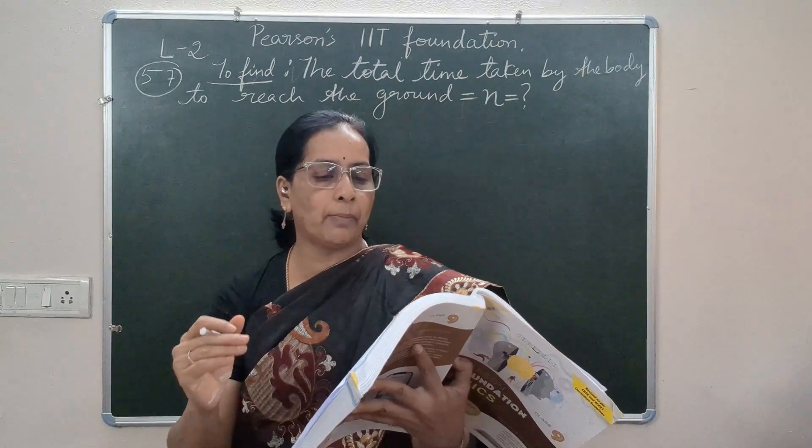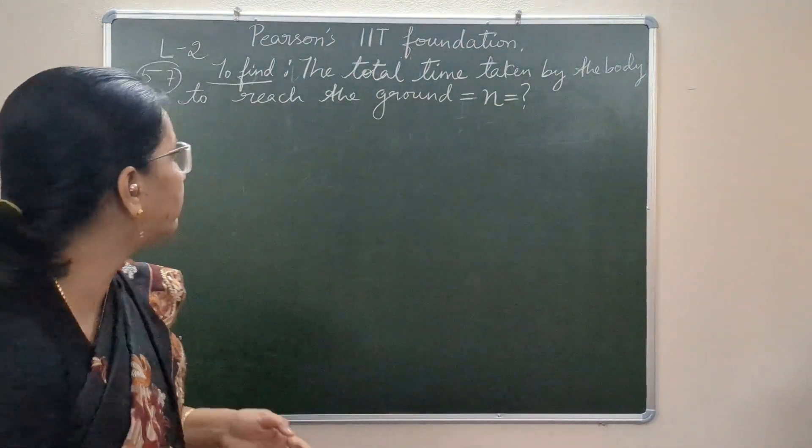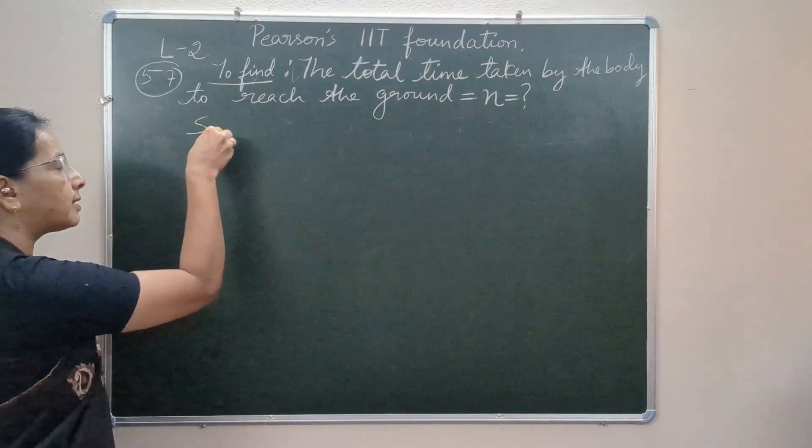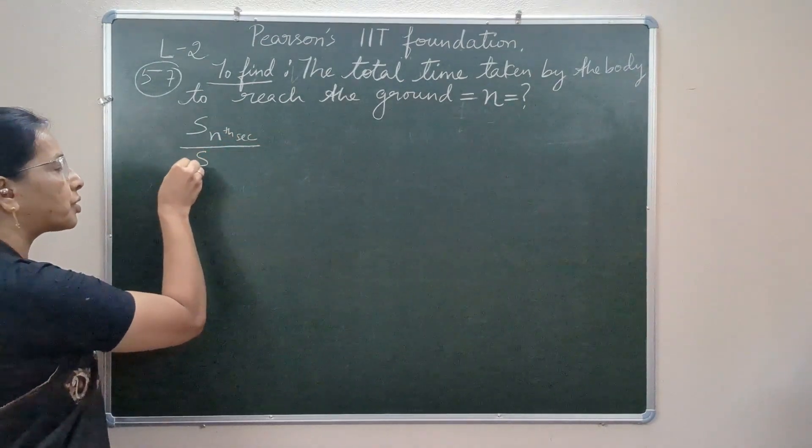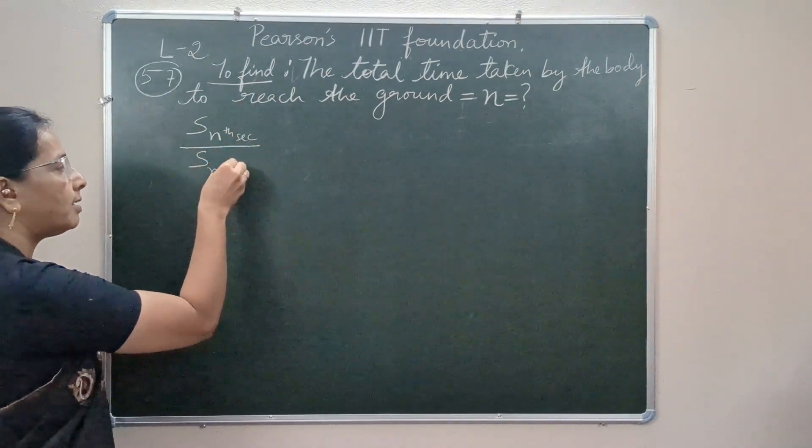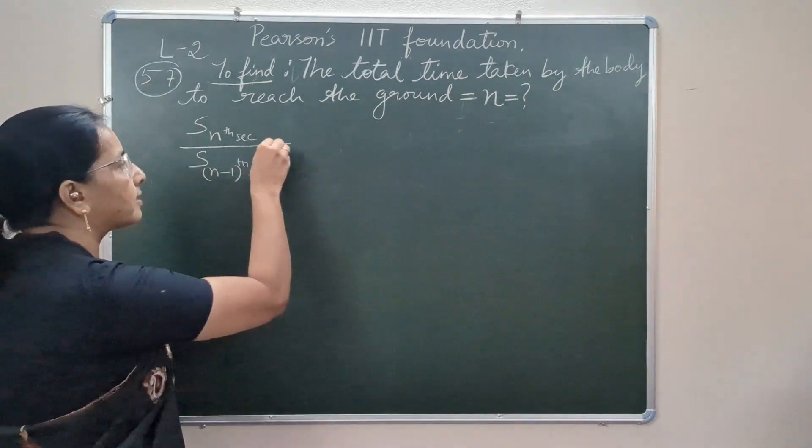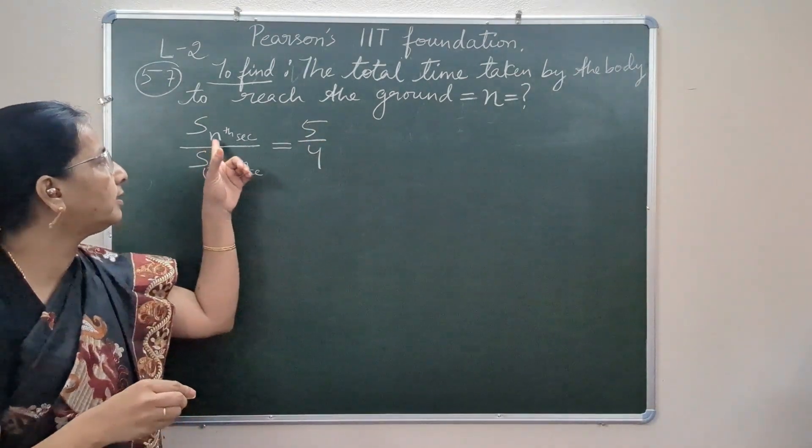We are supposed to find the total time taken by the body to reach the ground. So what is told to us is distance traveled by the body in the last second, means nth second of its motion, to distance traveled by the body in the last but one second of its motion is 5 by 4. We are supposed to find the time taken by the body, that is n, to reach the ground.